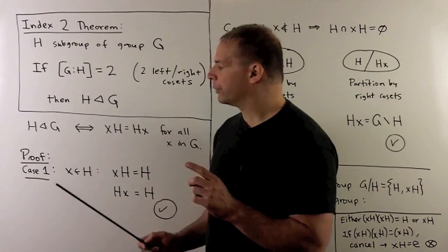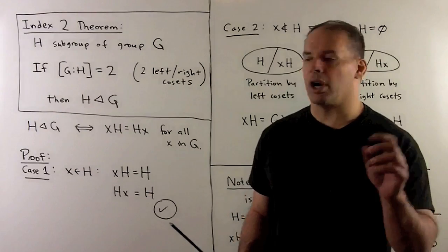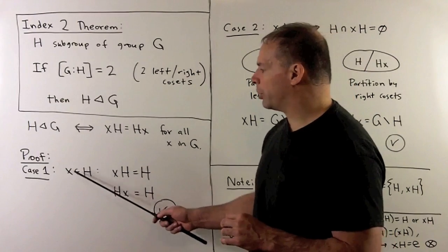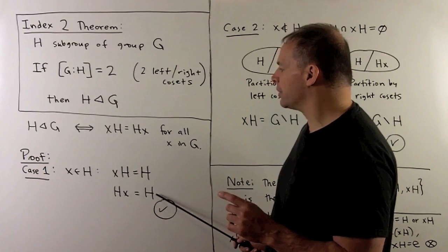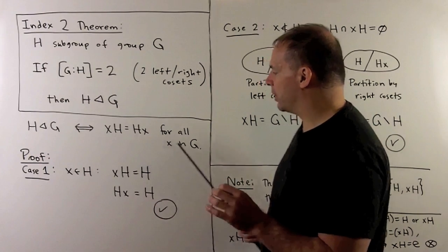For the proof, break it into two cases. First, if X is in our subgroup H, then XH equals H, HX equals H, and our statement holds.